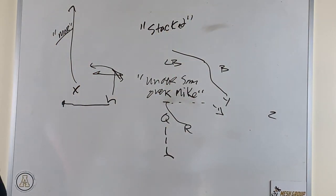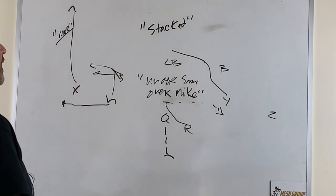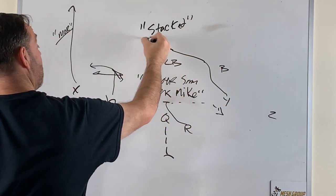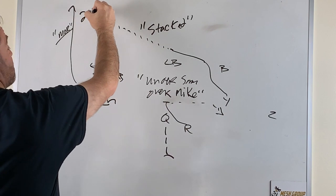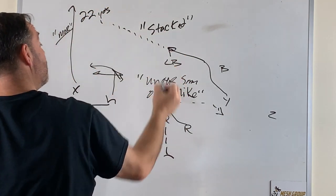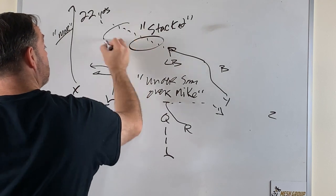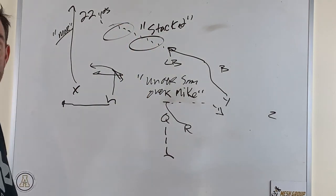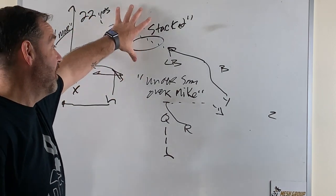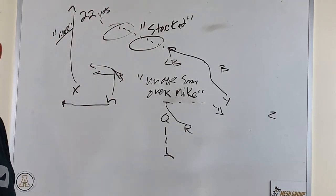Once Mike is stacked, Y is open. So what Y is going to do is once he gets in the middle, he's going to climb at an angle to 22 yards. But once he's here, we tell the quarterback, throw it in the grass, throw him in the hole.